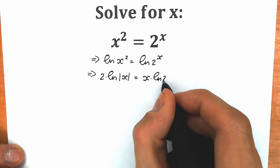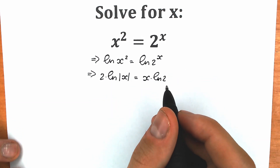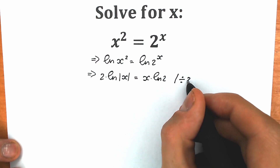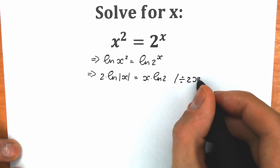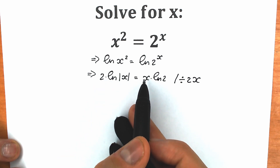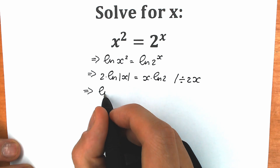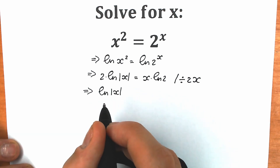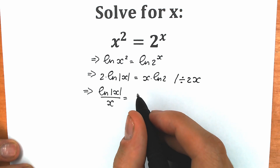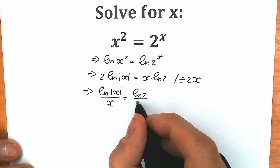Now let's try to group our variables on the left side and our constant on the right side. For this, let's divide both sides by 2x. When we divide both sides by 2x, we can easily cancel 2 from the left side, and x will cancel from the right side. So as a result, on the left side we will have natural log of absolute value x divided by x, equal to natural log 2 divided by 2.